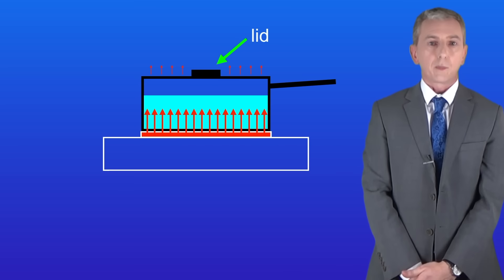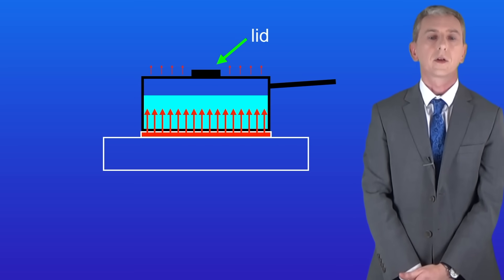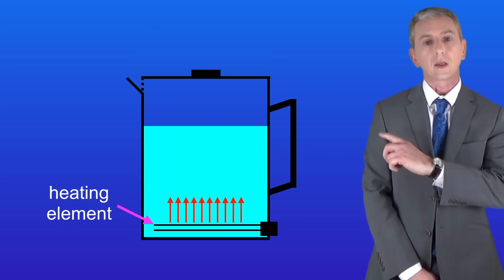Now the other issue with using a pan to heat water is that a lot of thermal energy is actually used to heat the base of the pan itself. So we can overcome that by placing the heating element inside the water. And that's how an electric kettle works like this.